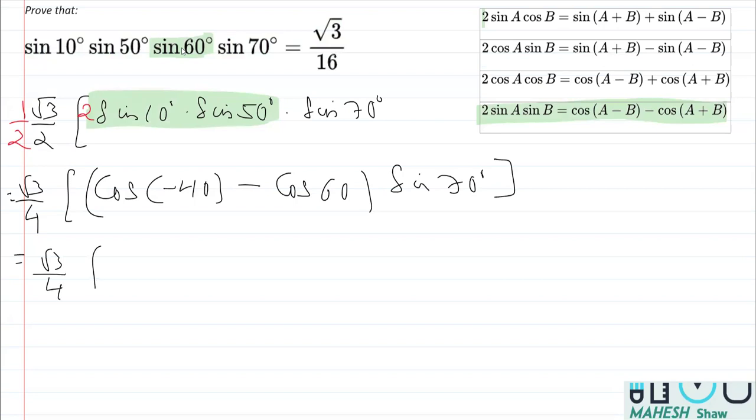After that, what we are going to do is to replace this cos 60° with its value, that is half. And what do we know here? That one more thing: cos minus x is cos x. So we can write this cos minus 40° as cos 40°. And this, as I said, it is half - cos 60° is half - times sin 70°.